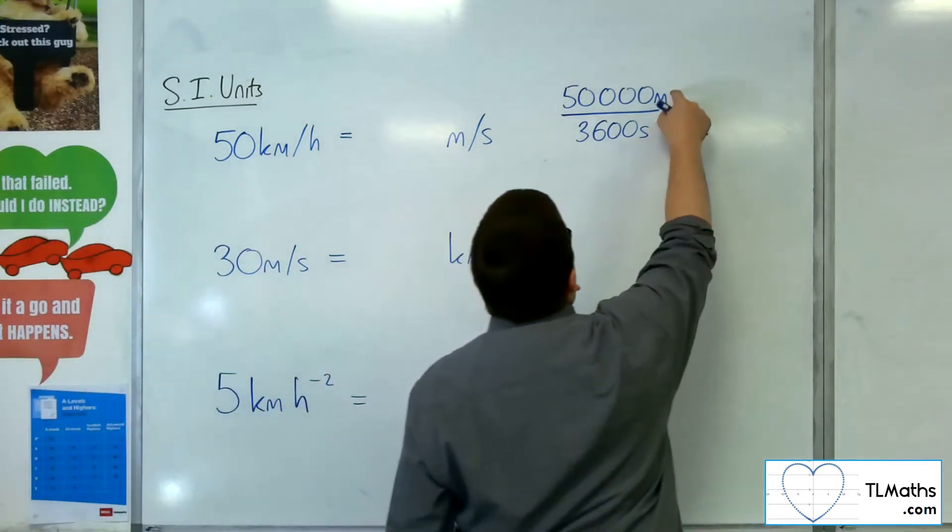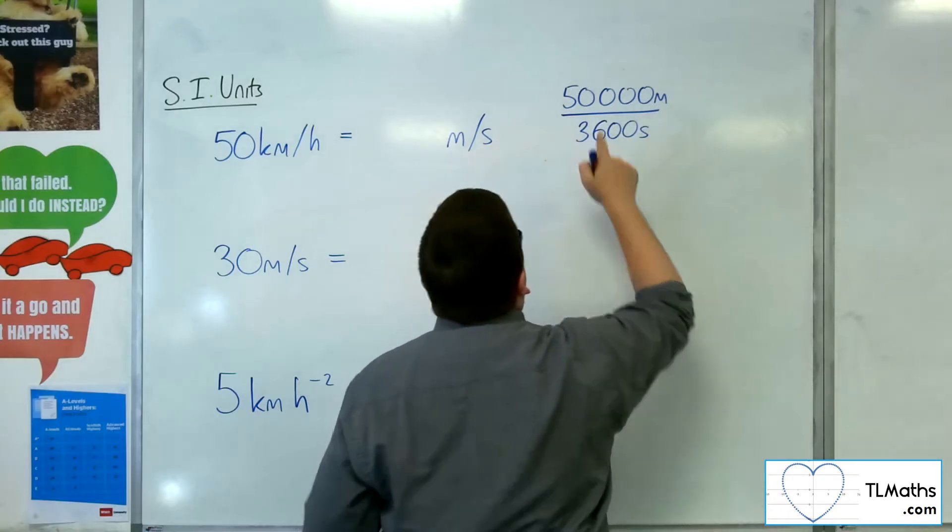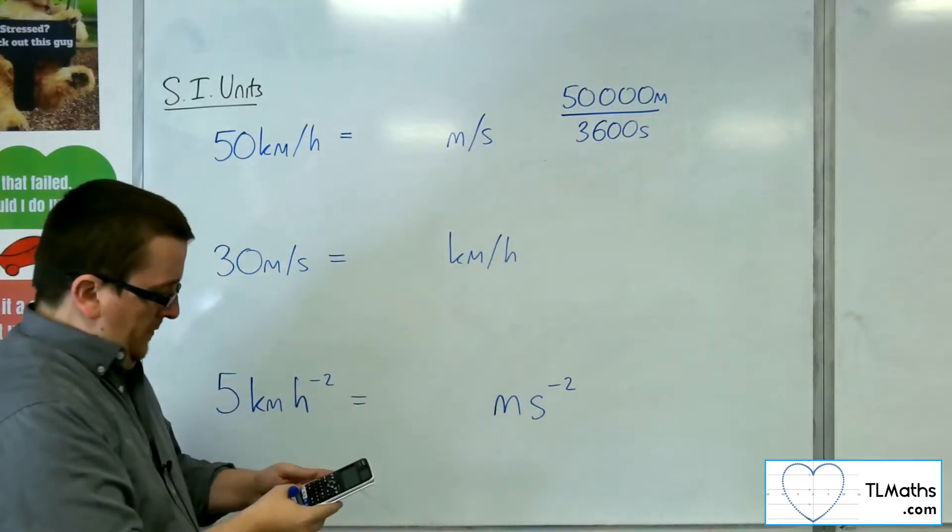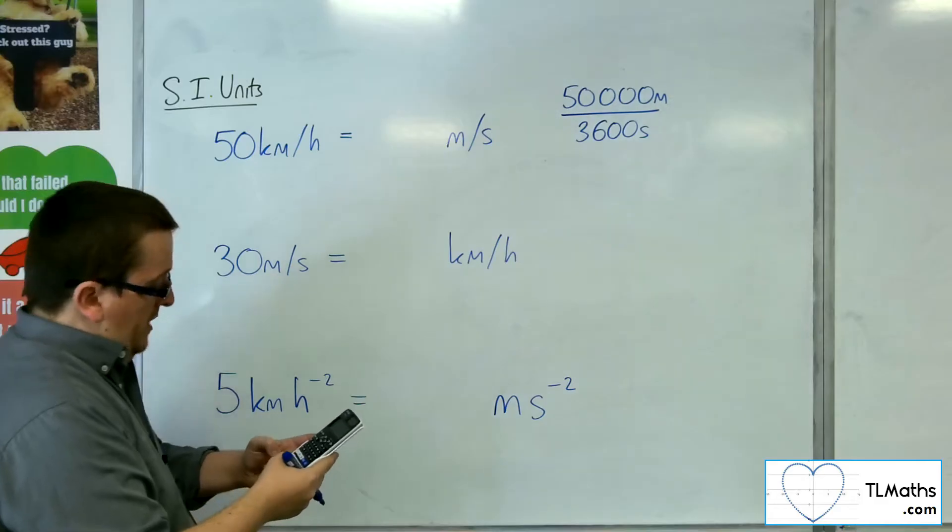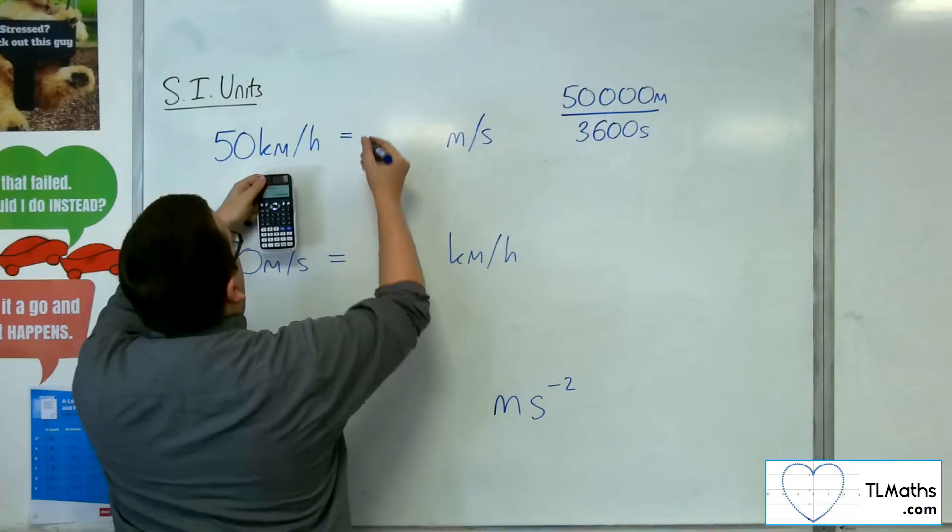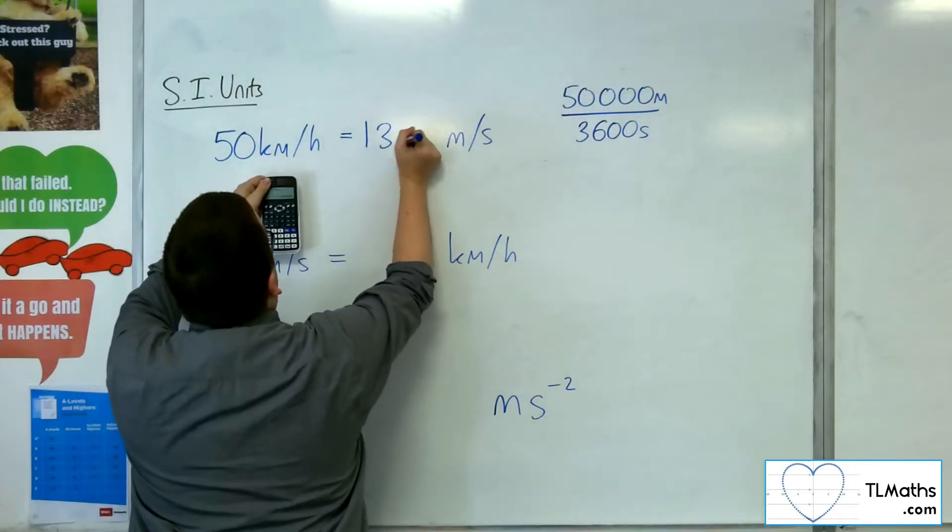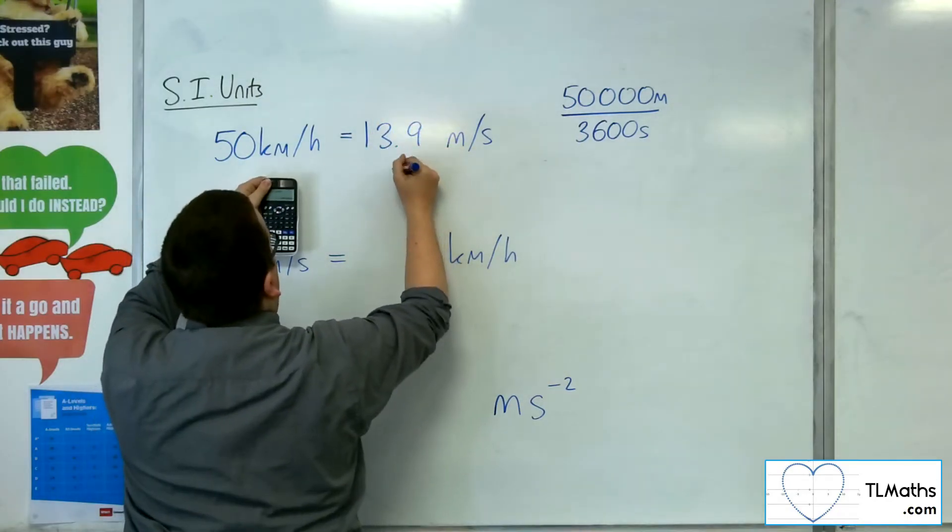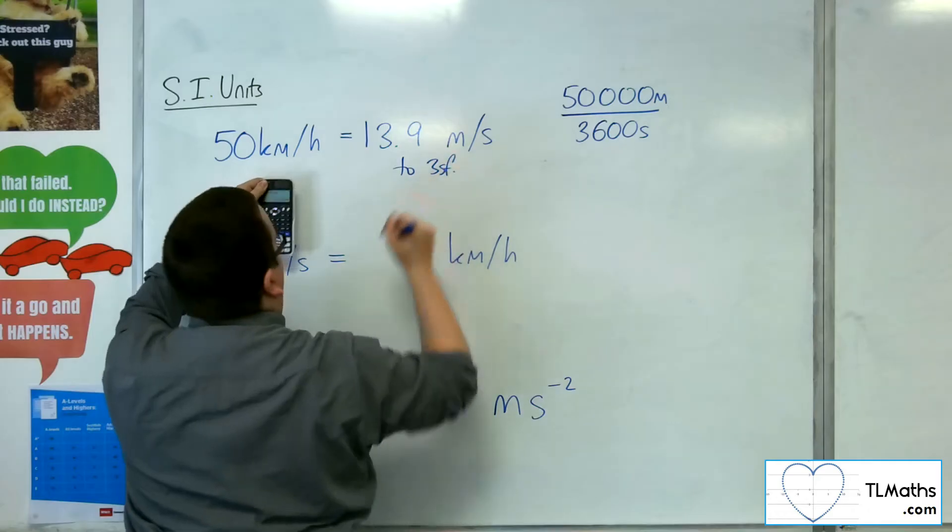This will leave you with the metres per second that you want. So 50,000 divided by 3,600, which is 125 over 9, so 13.9 metres per second to 3 significant figures.